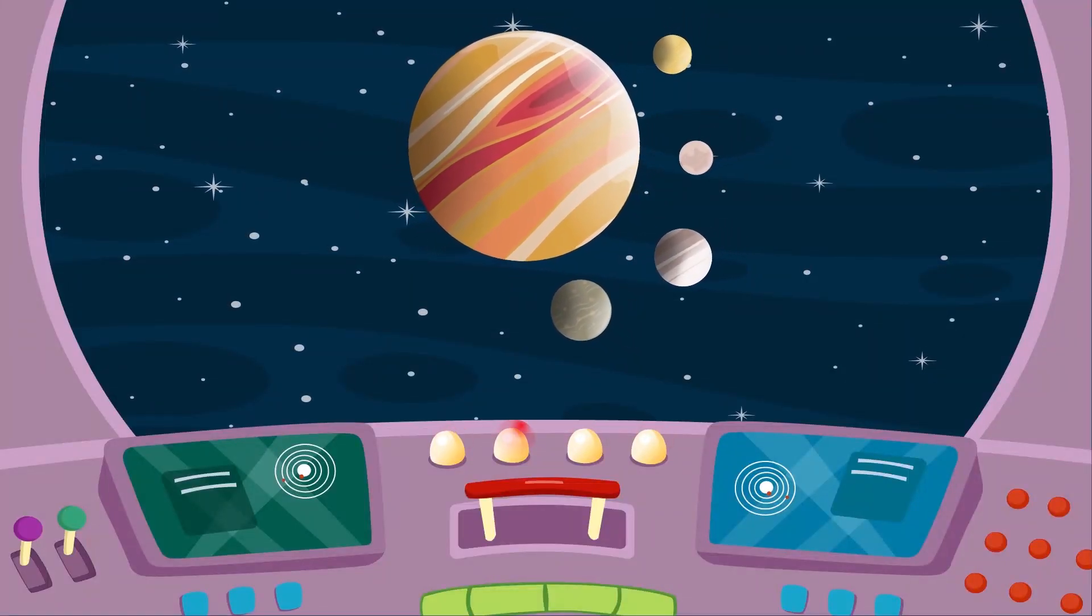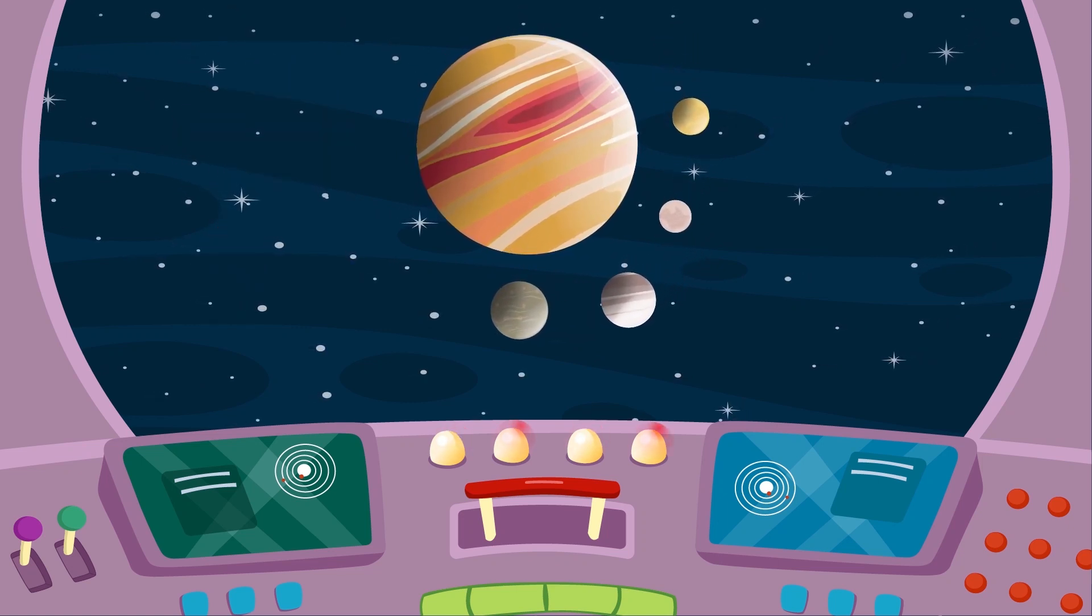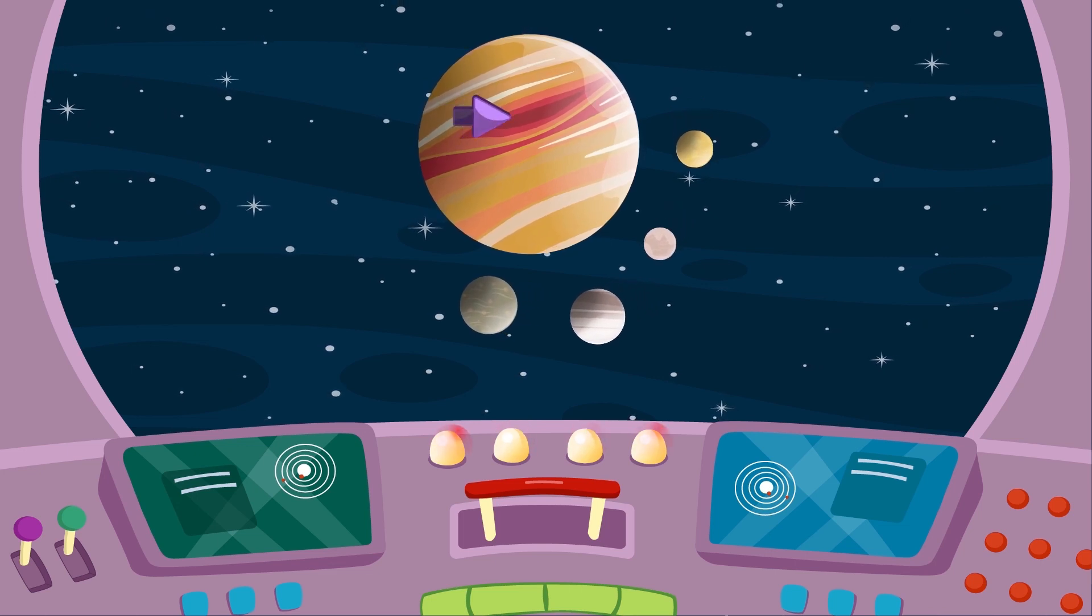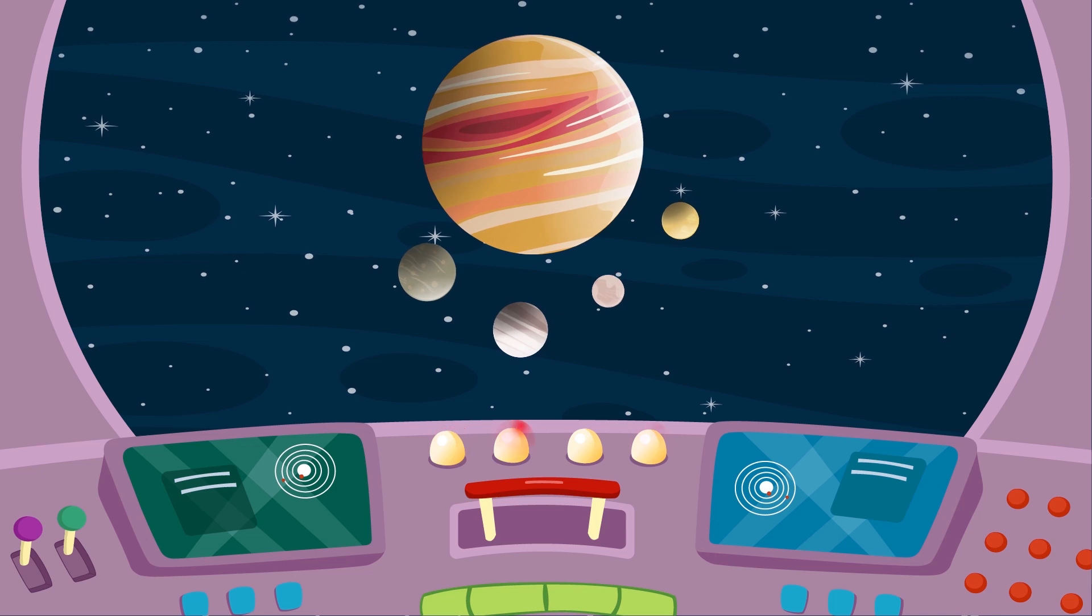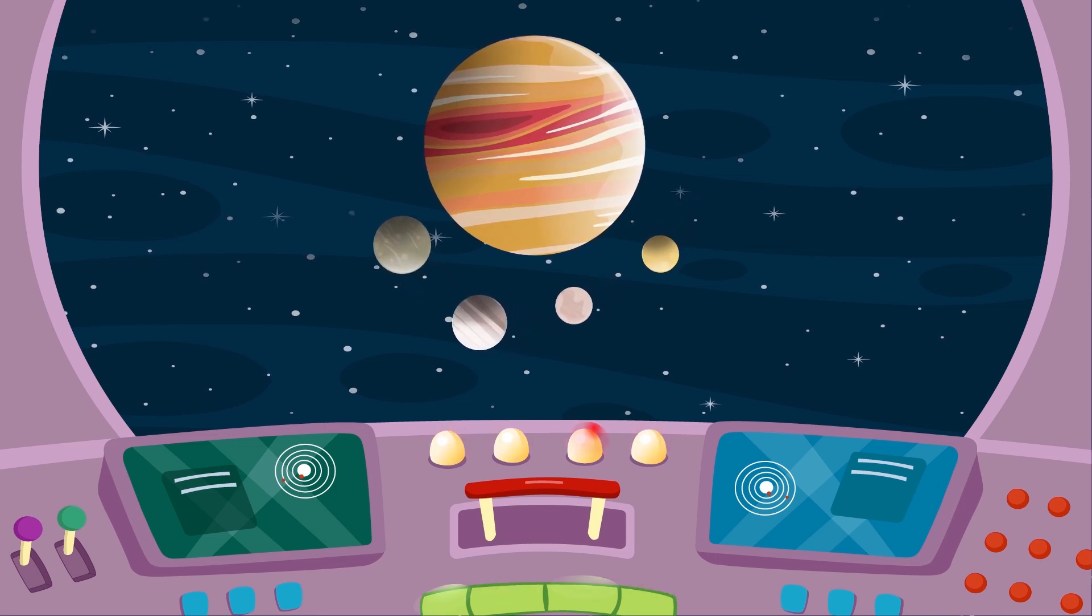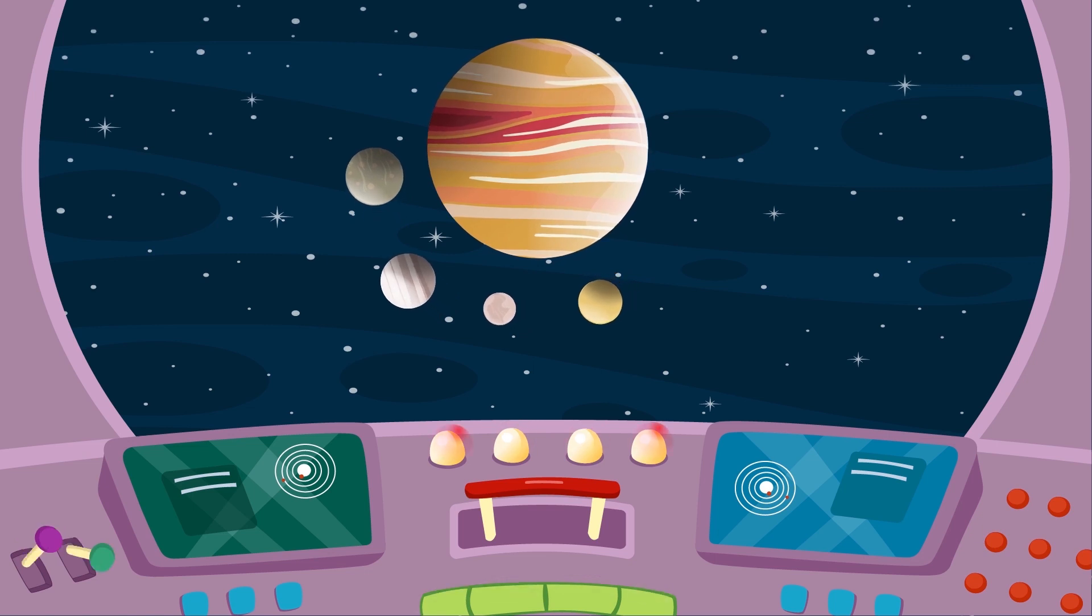Having passed the asteroids, Binky and friends see Jupiter, the largest planet in our solar system. It has a big red spot on its surface, which is actually a giant hurricane-like storm that has lasted over 300 years. Jupiter has four moons,